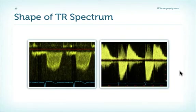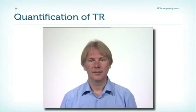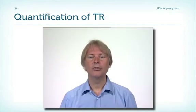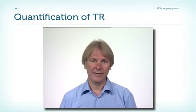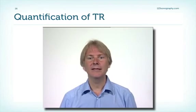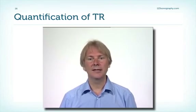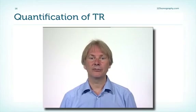Another thing to look at is the maximal forward velocity across the valve. Usually, if you have significant TR, the velocity is also higher. The TR signal is ideal to quantify pulmonary pressure, which is important in very many disease entities. This topic will be discussed in more detail in the chapter on right heart disease.